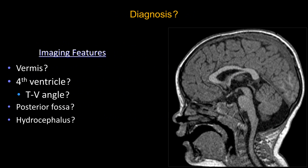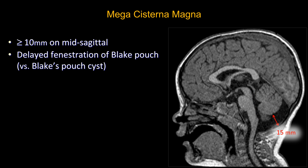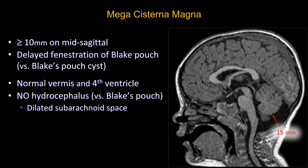What about this case? The vermis looks normal, the fourth ventricle is also normal, the TV angle is zero, the posterior fossa is not enlarged, and there is no hydrocephalus. This is mega cisterna magna. If the inferior aspect of the subarachnoid space is greater than 10 millimeters on the mid-sagittal view, you have mega cisterna magna. It is due to delayed fenestration of Blake's pouch — unlike Blake's pouch cyst where the pouch is not fenestrated, here delayed fenestration leads to enlargement of the subarachnoid space.